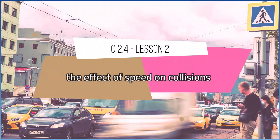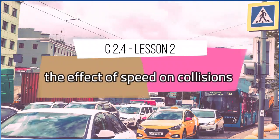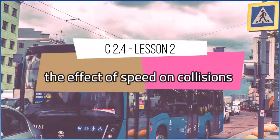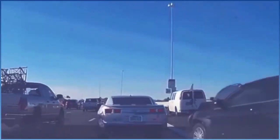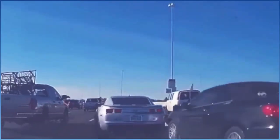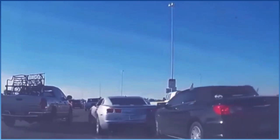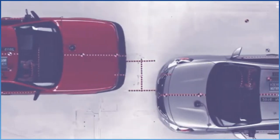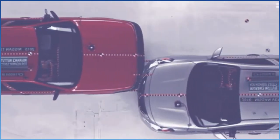Lesson 2: The Effect of Speed on Collisions. What do you think would happen if two cars traveling at different speeds in the same direction collided? How would the forces in this rear-end collision compare to those in a headlong collision?